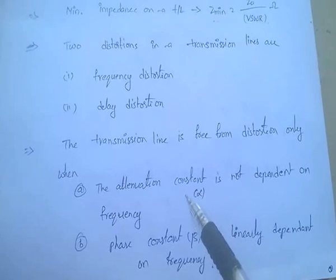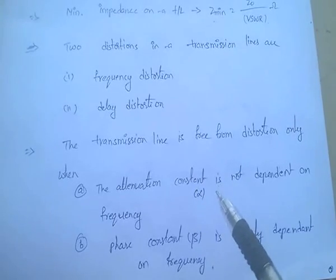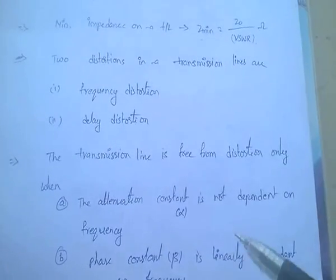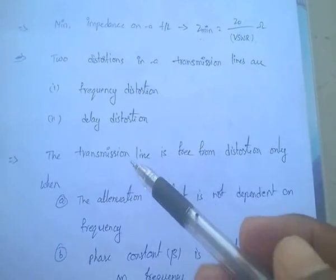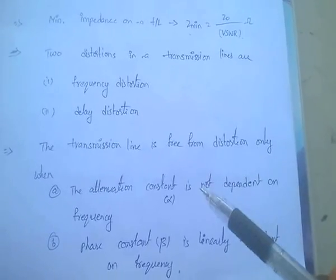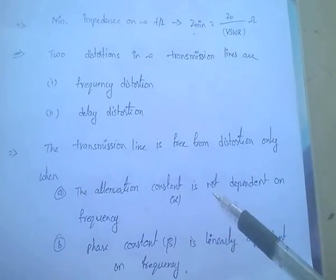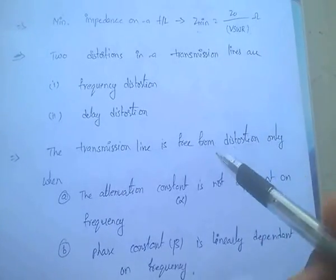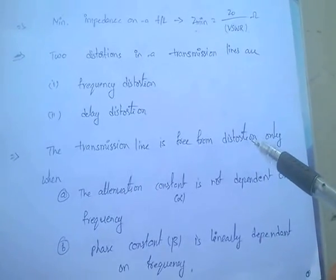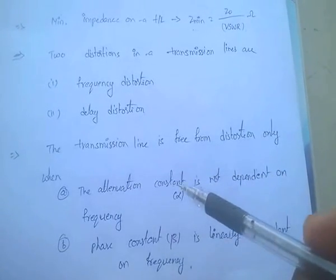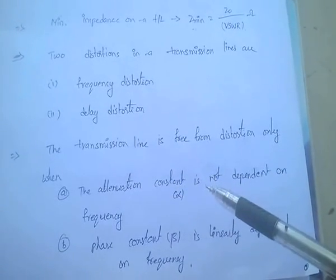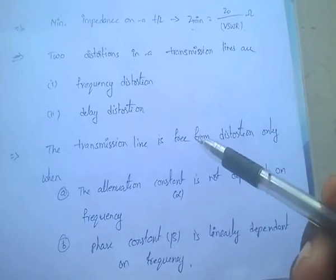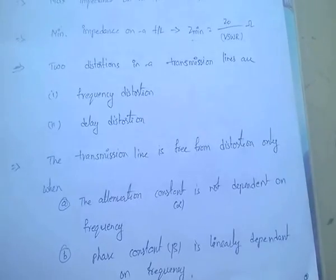If a transmission line is free from distortion, only when alpha is not dependent on frequency and beta is dependent on frequency. A distortion-less line is one for which the attenuation constant is frequency-independent and the phase constant is frequency-dependent. Then the line is called a distortion-less line.